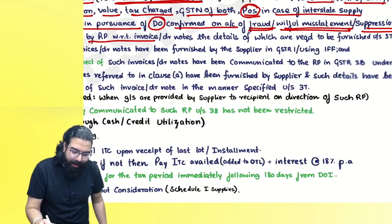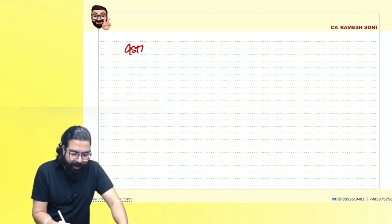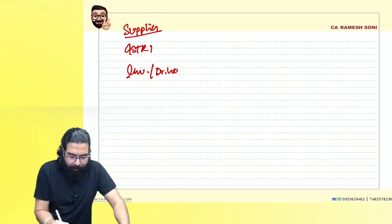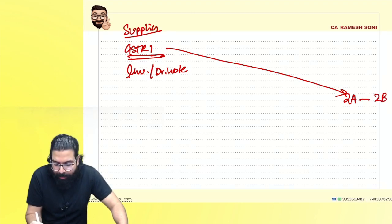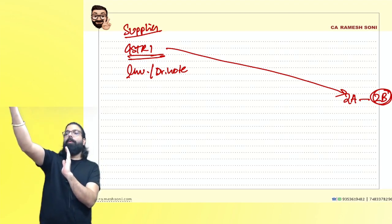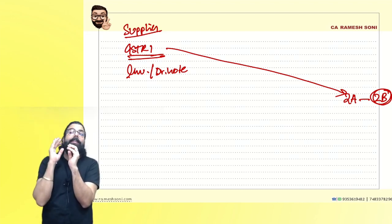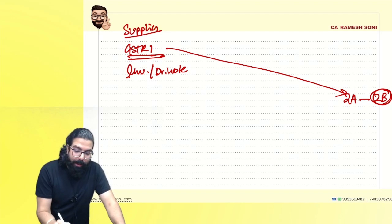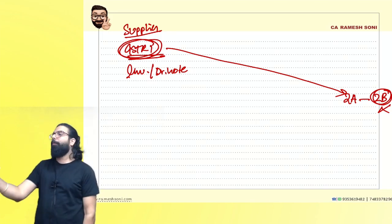No ITC shall be availed unless the supplier has shown the invoice or debit note in his GSTR-1. It will then come in your GSTR-2A, and GSTR-2B will be created on the 14th. Whatever credit appears in your GSTR-2B, you can take. If supplier does not show in GSTR-1, it will not come in your GSTR-2B and you will not be able to take the credit.